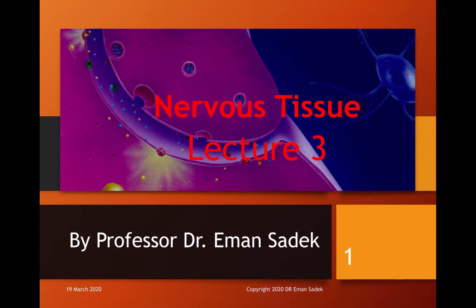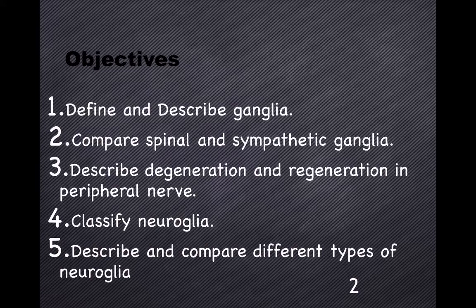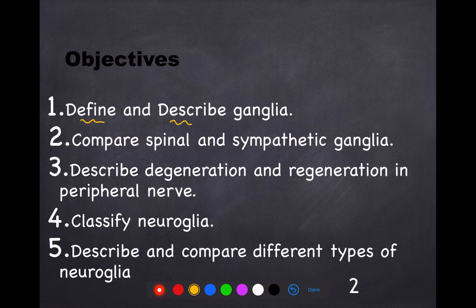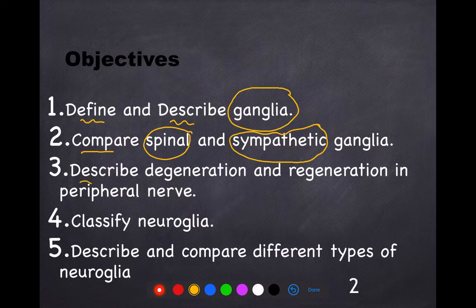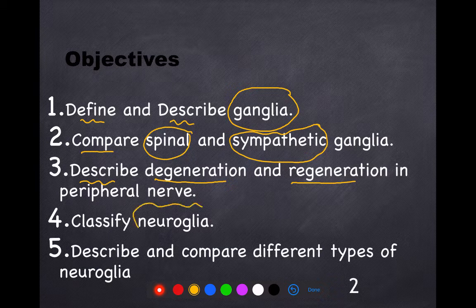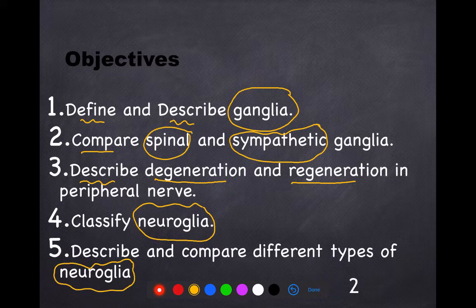This is the presentation for lecture three on nervous tissue. Our objectives today are five: you have to define and describe the ganglia; compare between two types of ganglia — spinal ganglia and sympathetic ganglia; describe the stages of degeneration and regeneration in the peripheral nerve; classify neuroglia; and describe and compare the different types of neuroglia, a very important topic.